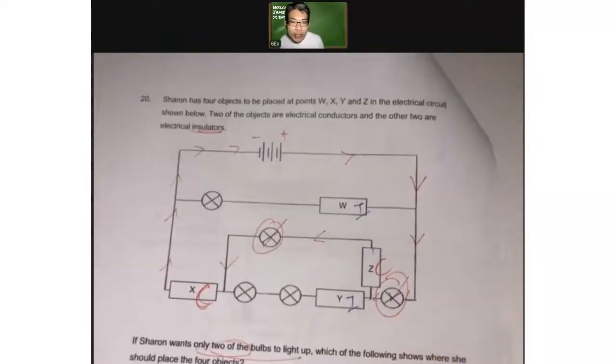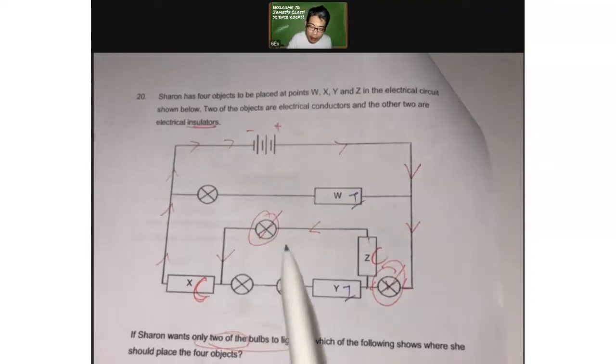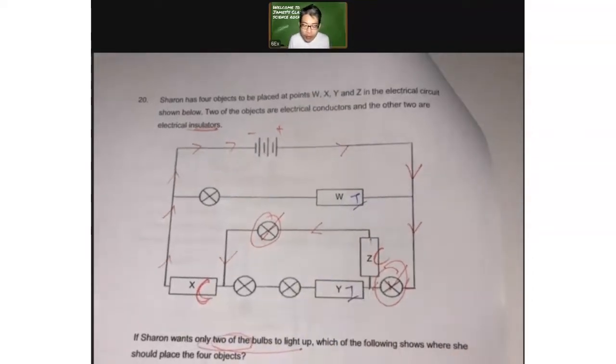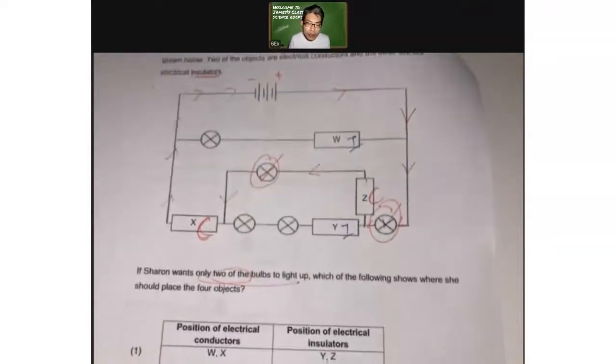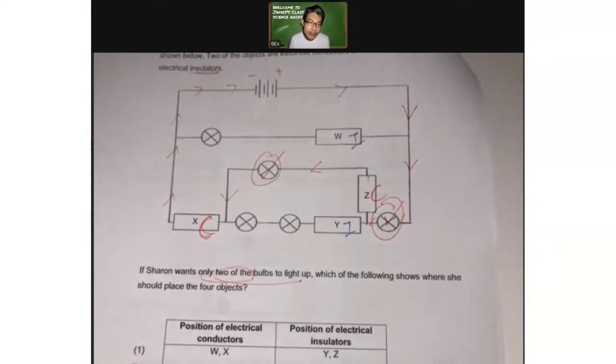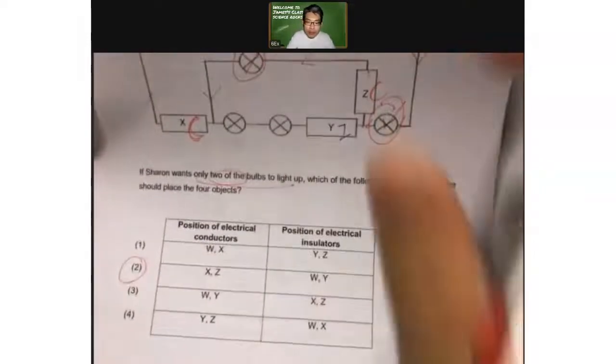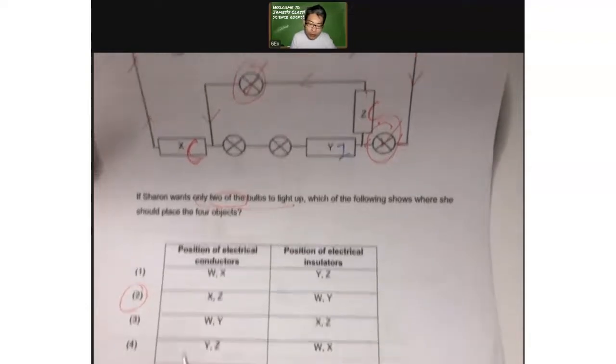Next one, question 20, electrical system question. Now Sharon has four objects to be placed at points W, X, Y, and Z in the electrical circuit shown. So W, X, Y, Z. Two of the objects are electrical conductors, and the other two are electrical insulators. So if Sharon only wants two of the bulbs to light up, which of the following shows where she should place the four objects? Now how should we do this in the actual test? I would suggest you use a pencil and do what I'll be showing you in a while. And then you can erase it off when it doesn't meet your needs. What do I mean? Because you only have these four options, right?